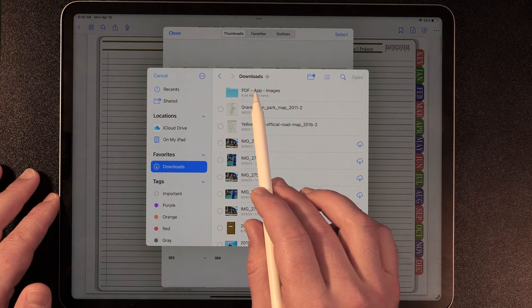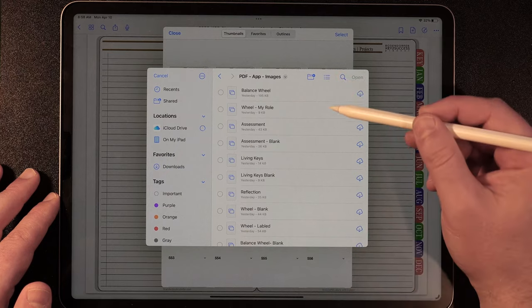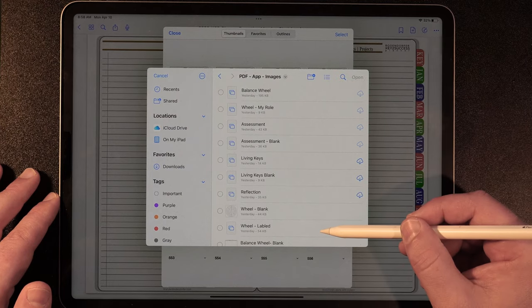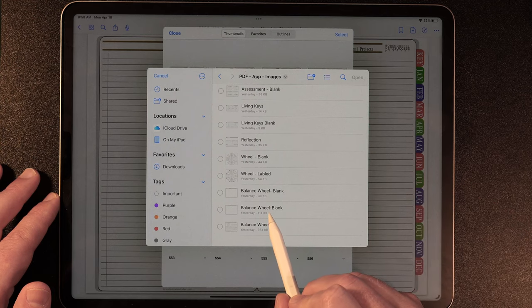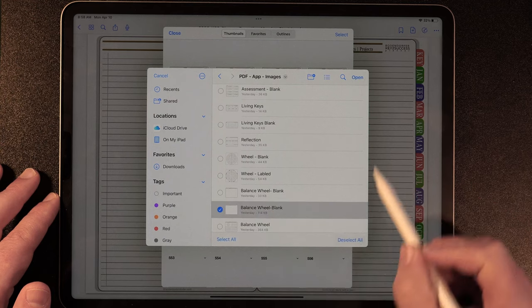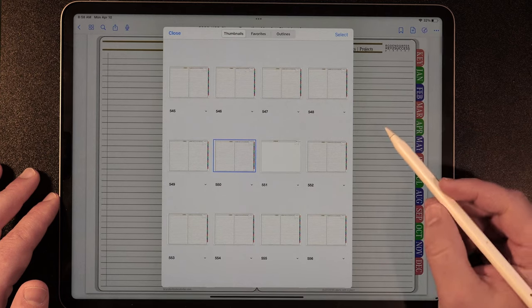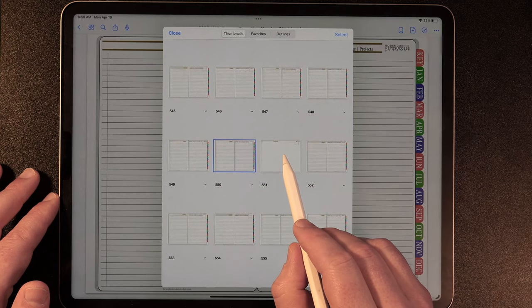We saved the files in the download area and you can see right here PDF app images is what you pulled in from your download. And then we look right here, we're going to find the template that we're going to use as our background, which is this file right here.